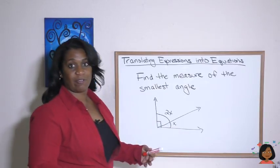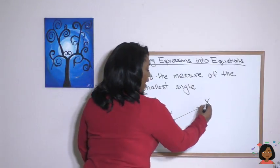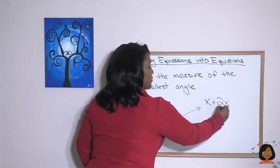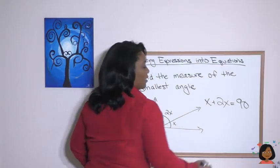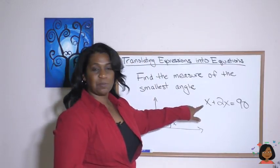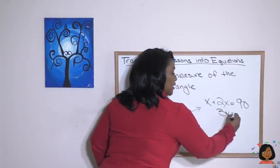So what if we added these two together so that they equaled 90 degrees, which would be X, this one, plus 2X, that one, equals 90? From here, we have an algebraic expression that we can simplify. 2X plus X equals 3X equals 90.